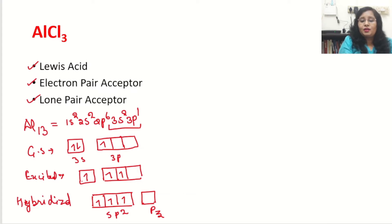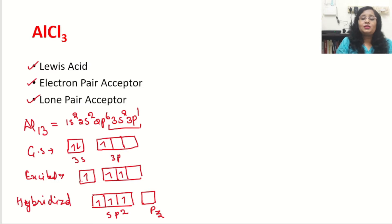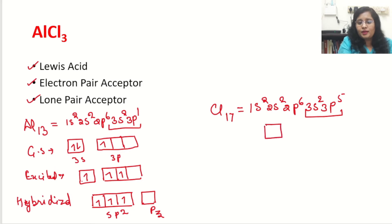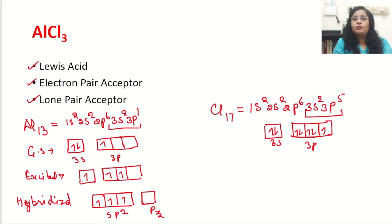In this hybridized state, aluminium has three unpaired electrons, so aluminium has the capacity to accept three electrons from outside to pair up these three electrons. At the same time, chlorine has 17 electrons with the configuration 1s² 2s² 2p⁶ 3s² 3p⁵. Looking at the valence shell — 3s² and 3p⁵ — it means 3p is having one electron less than a full octet.